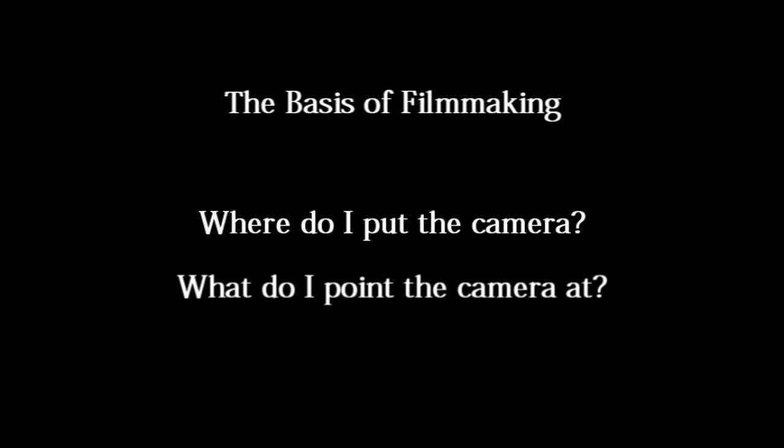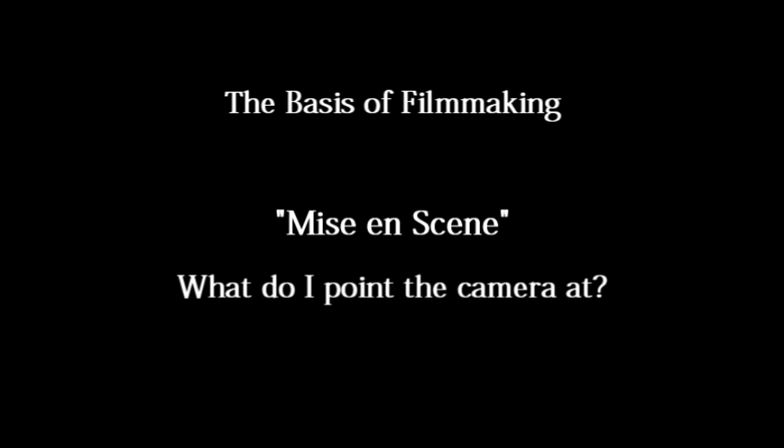In this video, we will look at the standard shots and angles that a filmmaker uses to tell a story with moving images. To an extent, the basis of filmmaking can be boiled down to two questions: Where do I put the camera? And what do I point the camera at? This second question is covered in the section on the mise-en-scene. Here, we will take a look at the basics surrounding the first question. Camera shots and angles can be considered from what shot size will be used, and from what angle is the filmmaker shooting the shot.